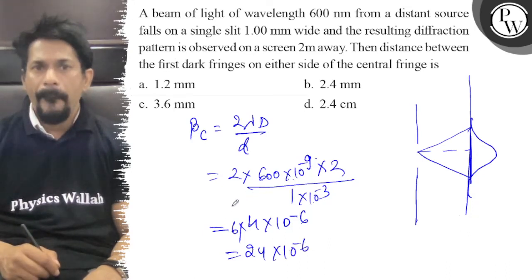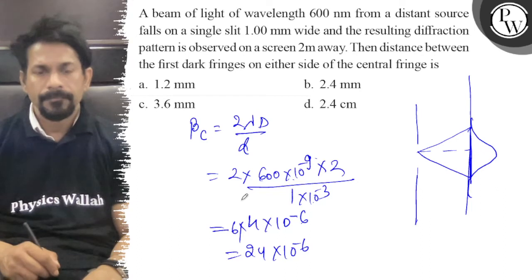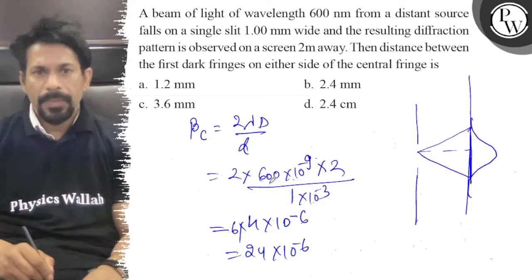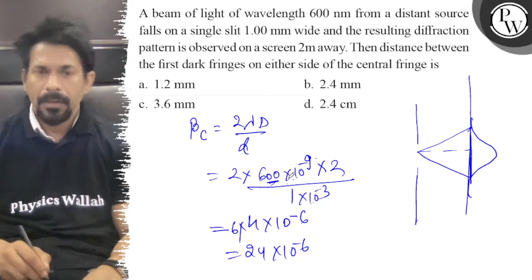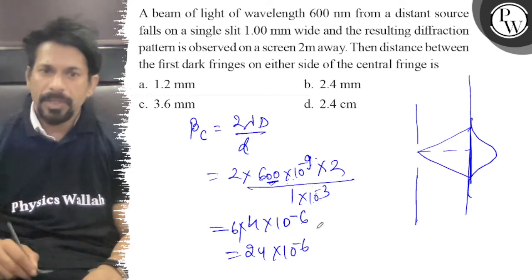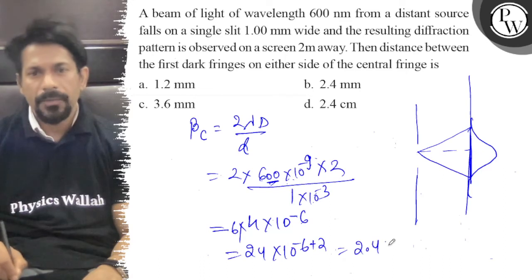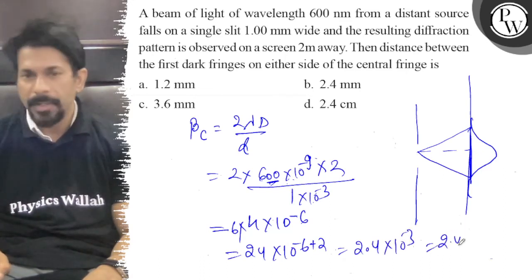So this is how you get 2.4, so you get 2.4 into 10 power minus 3, 2.4 mm.